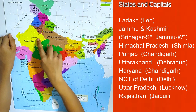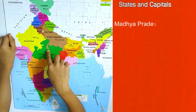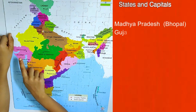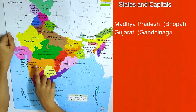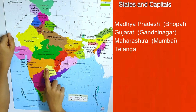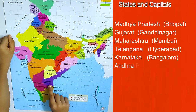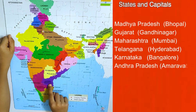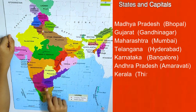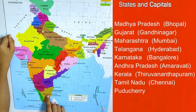Rajasthan, capital Jaipur. Madhya Pradesh, capital Bhopal. Gujarat, capital Gandhinagar. Maharashtra, capital Mumbai. Telangana, capital Hyderabad. Karnataka, capital Bengaluru. Andhra Pradesh, capital Amaravati. Kerala, capital Thiruvananthapuram. Tamil Nadu, capital Chennai.